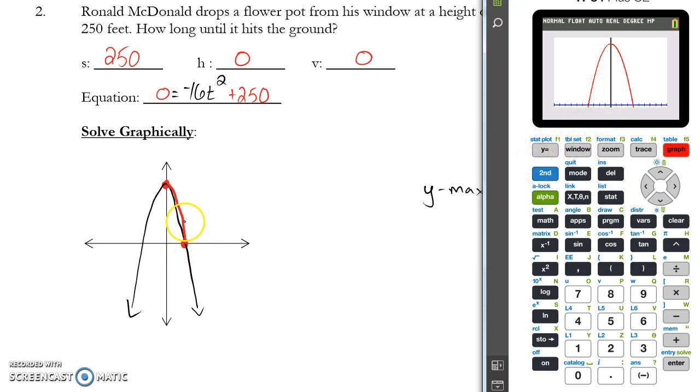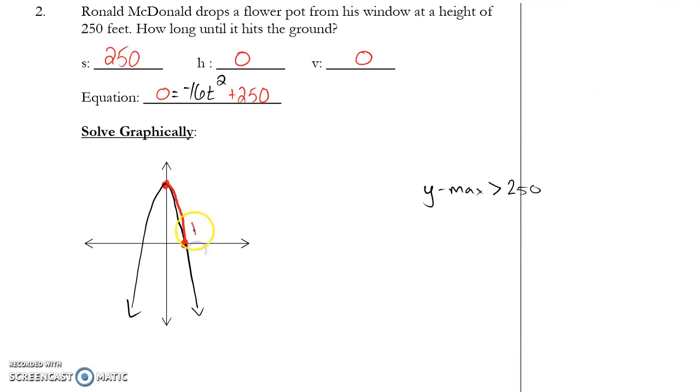Since that's my focus, I have S and H. I'm finding H, which is 2nd trace 5. Get close to that intersection, enter, enter, and enter. 3.952 means it's 3.950. This is H. It's 3.95, 0, which means 3.95 seconds for this to fall and hit the ground.